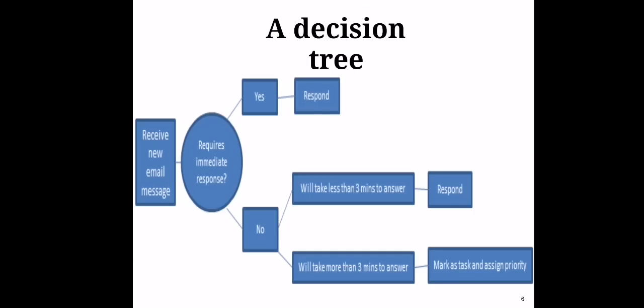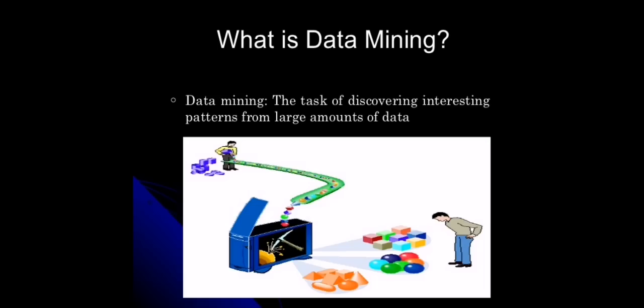A decision tree: Receive new email message. Requires immediate response? Yes: Respond. No: Will take less than 3 minutes to answer? Respond. Will take more than 3 minutes to answer? Mark task and assign priority.